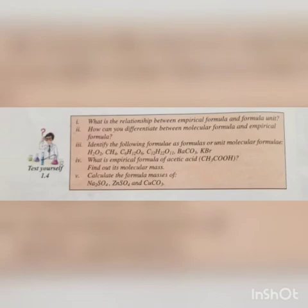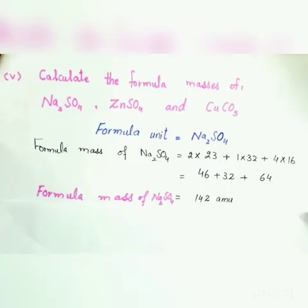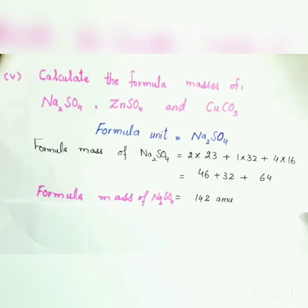The next question is to calculate the formula masses of sodium sulfate, zinc sulfate, and copper carbonate. First, we solve for sodium sulfate Na2SO4. Its formula unit is Na2SO4. Using the formula — number of atoms multiplied by atomic mass — sodium has 2 atoms (atomic mass 23), sulfur has 1 atom (atomic mass 32), and oxygen has 4 atoms (atomic mass 16). Solving gives us 142 atomic mass units.